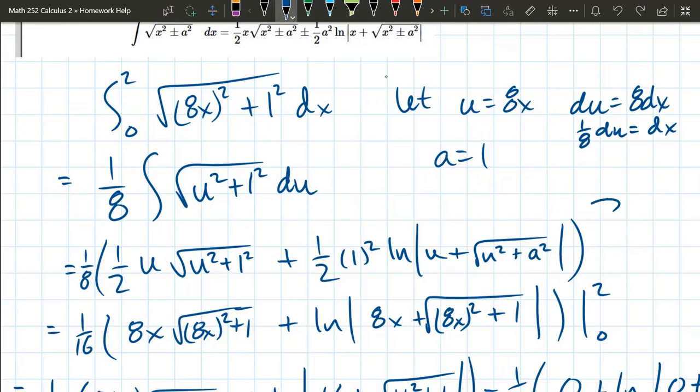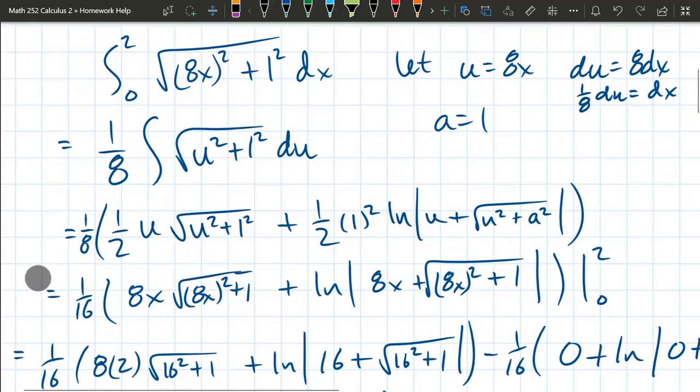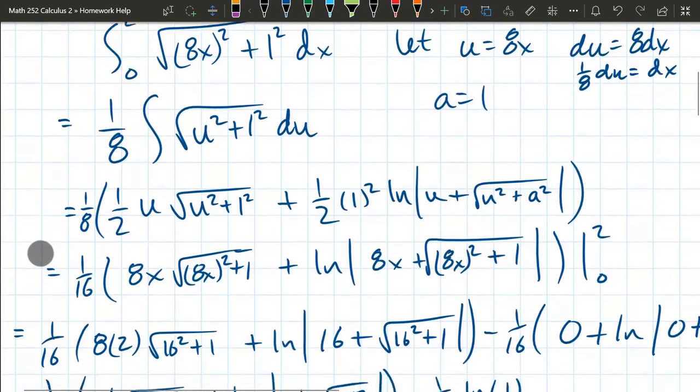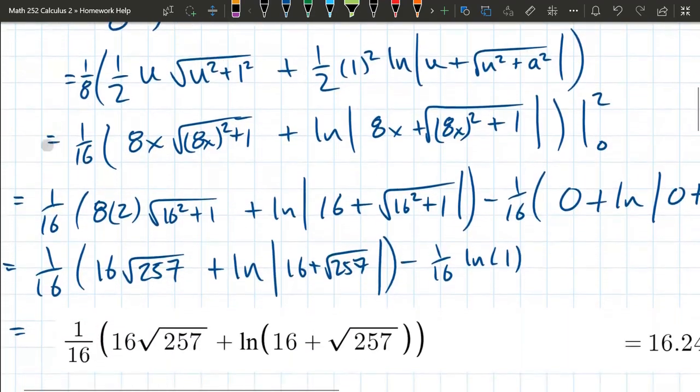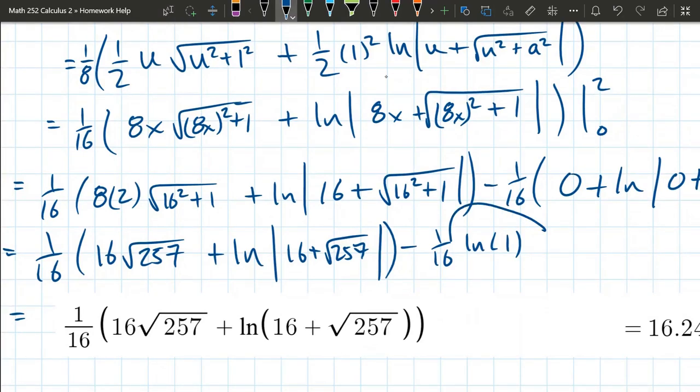I don't include the endpoints until I get back to x's. Then I put the 0 to 2 in. Plug it all in. Be very careful. Remember, natural log of 1 is 0. So that term disappeared on the next line.